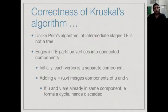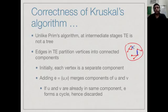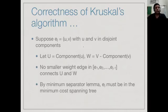In Kruskal's algorithm, unlike in Prim's algorithm, at the intermediate stages we do not have a tree — we just have a collection of components. We will have some vertices connected in one component, then other vertices in another component, and so on. Whenever we add an edge, it takes two currently different components and connects them. We cannot add an edge within a component, because each component is like a tree, and adding an edge within a tree forms a cycle. So we always add edges across different components.